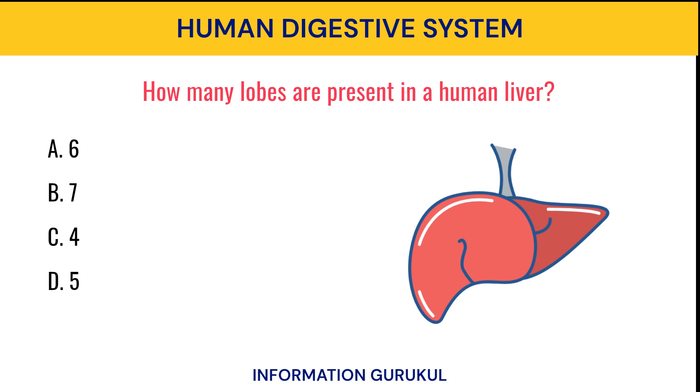How many lobes are present in a human liver? 4.